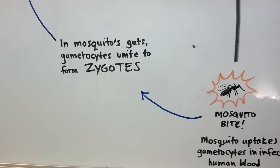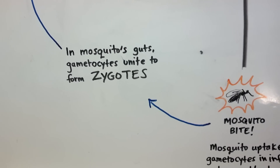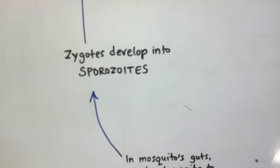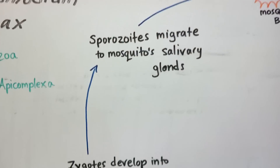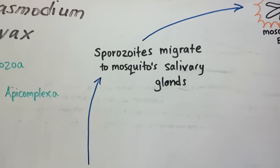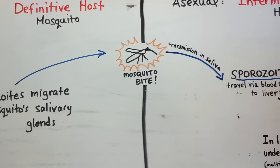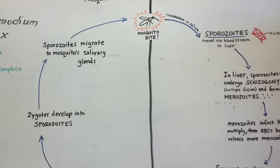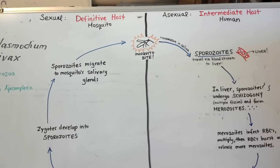In the mosquito's gut, the gametocytes unite to form zygotes. Then the zygotes develop into sporozoites. The sporozoites migrate to the mosquito's salivary glands, and voila — another mosquito bite, and the cycle begins again. And so there you have it, that is the life cycle of Plasmodium vivax!